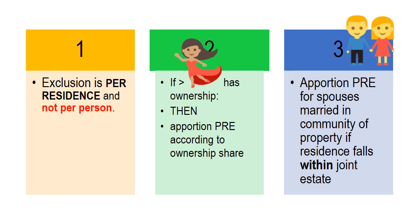It's very important to understand that the primary residence exclusion is an exclusion per residence and not per person. What that means is you are only allowed to get it when you dispose of a primary residence — it's that residence that qualifies for the exclusion, not the individual. Compare this to the annual exclusion for CGT purposes, which is 40,000 rand per year per natural person. The PRE works differently — it's per residence.